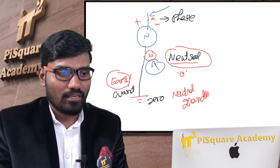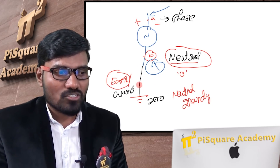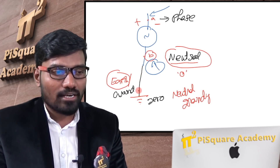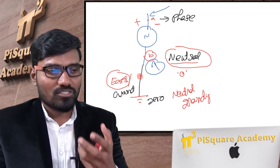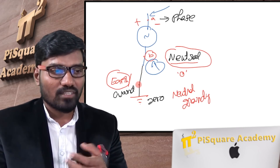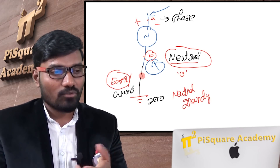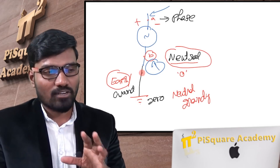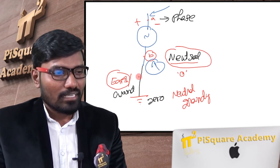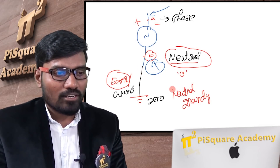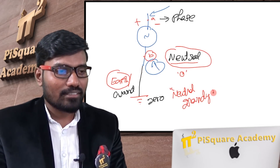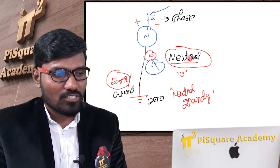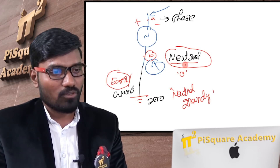Instead of connecting the neutral directly to ground — which is solid grounding — you can keep a resistance, called resistance grounding, or reactance grounding, or Petersen coil grounding. There are different types of neutral grounding. Neutral grounding means connecting the neutral wire to the ground to maintain neutral potential at zero volts.